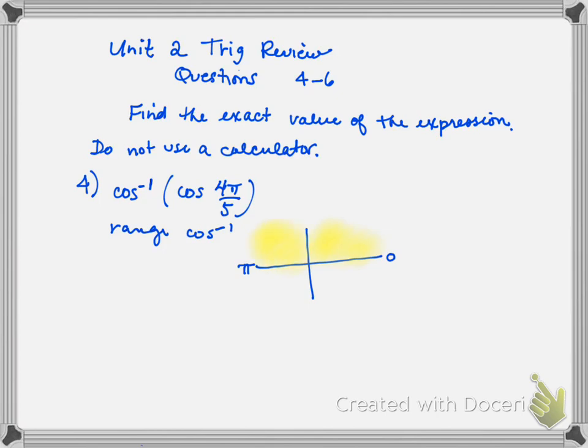If the value is positive, it will end up in quadrant 1. And if cosine is negative, it ends up in quadrant 2. So as long as I have an angle in either quadrant 1 or quadrant 2, I'm okay. So the question is: is 4π/5 in quadrant 1 or quadrant 2?